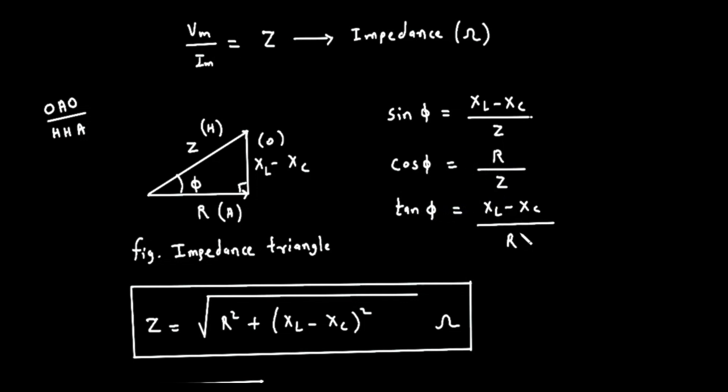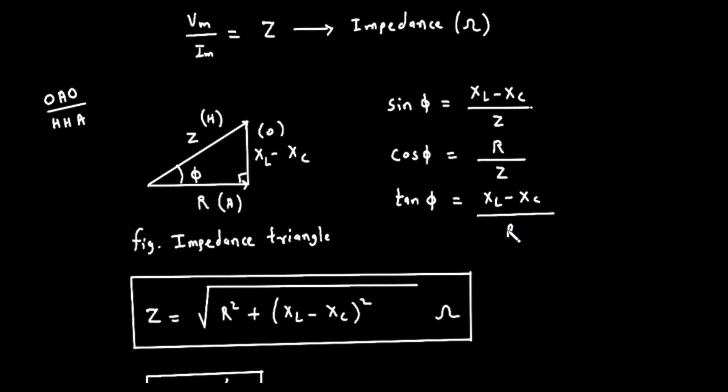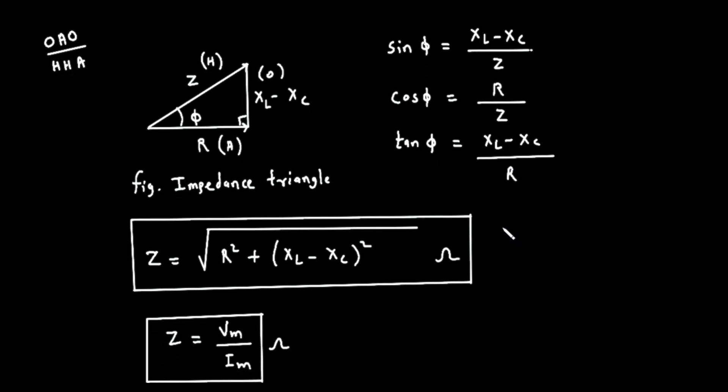Tangent of phi is opposite over adjacent. This gives us Tangent of phi equals the quantity, X sub L minus X sub C, divided by R. This is often the easiest way to calculate the phase angle itself.